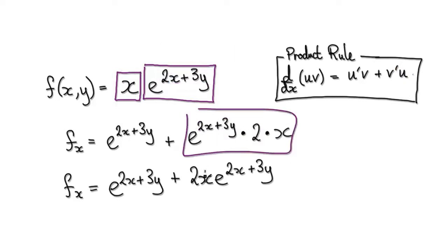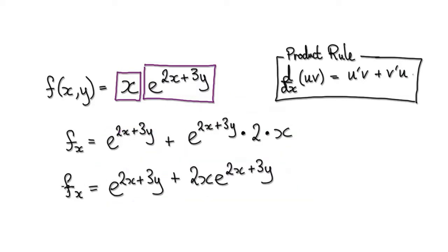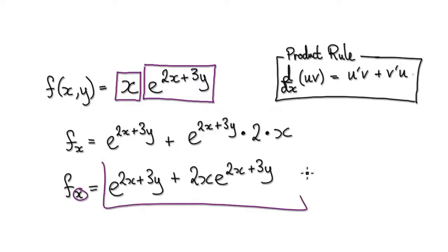So now tidy this up. This block becomes this, and this stays the same. So your partial derivative with respect to x is given by this.